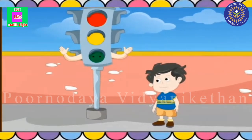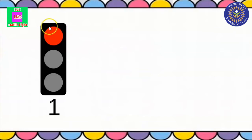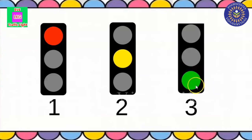Children, how was the rhyme? I hope you have enjoyed it. I am sure that by hearing this rhyme you have understood what each light means. We can see three lights in a traffic light: the first one is red — red light says stop; the second one is yellow — yellow says wait till the light is green; the third one is green — green says to go.